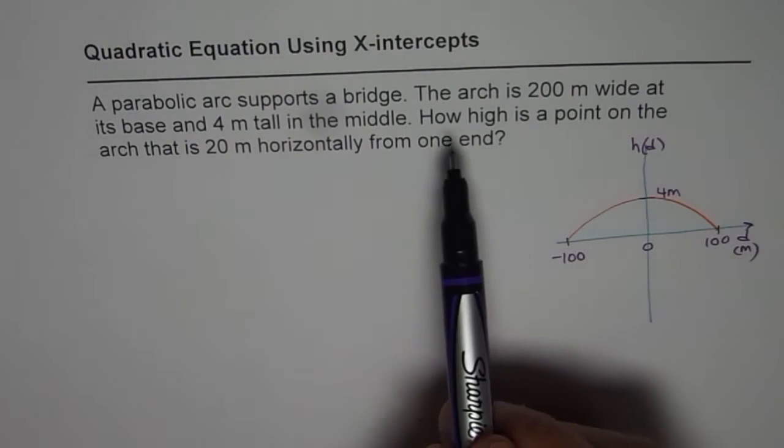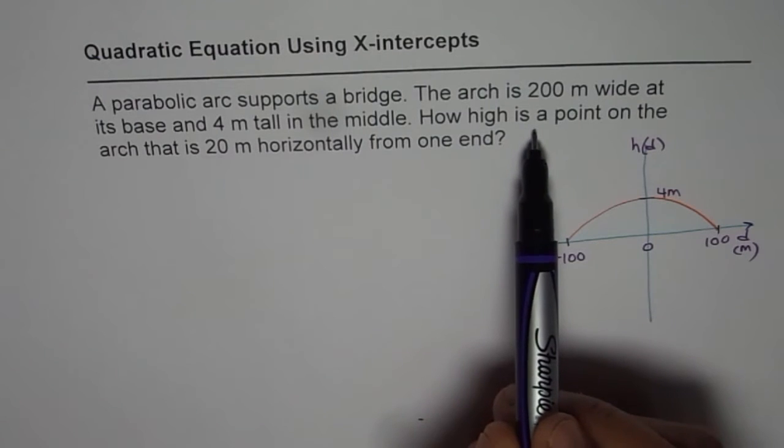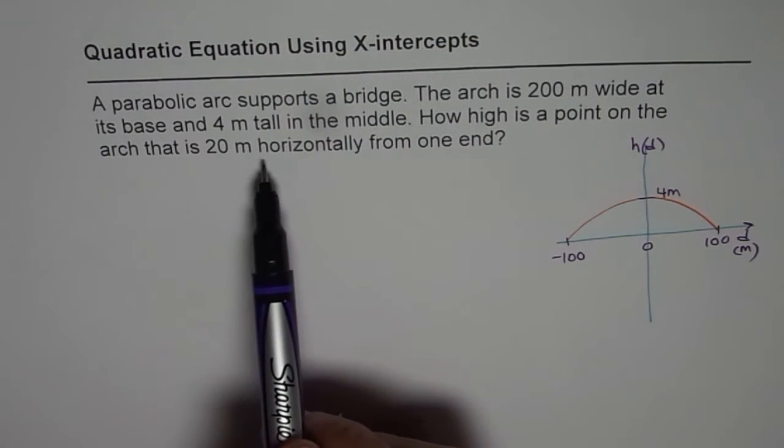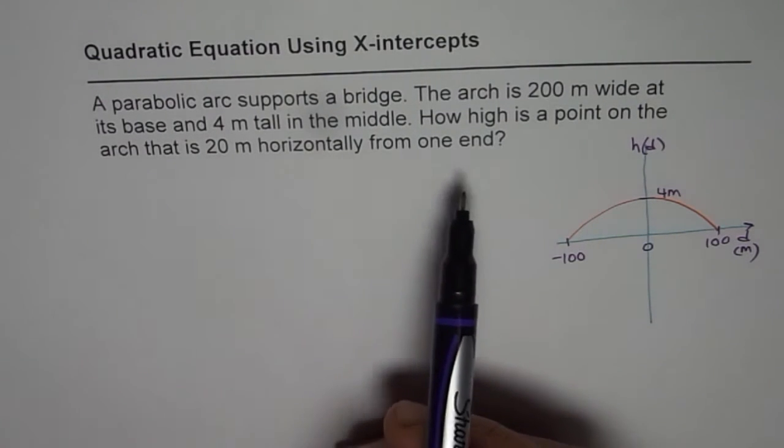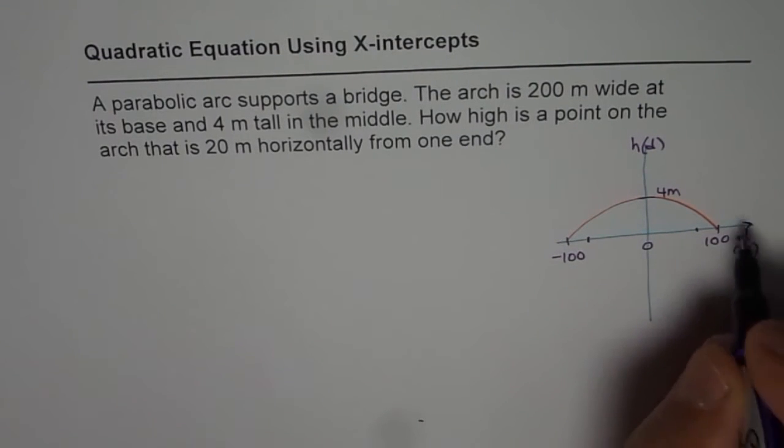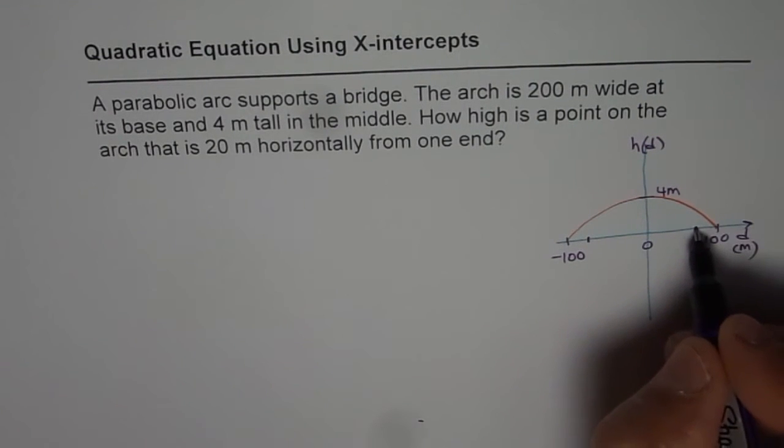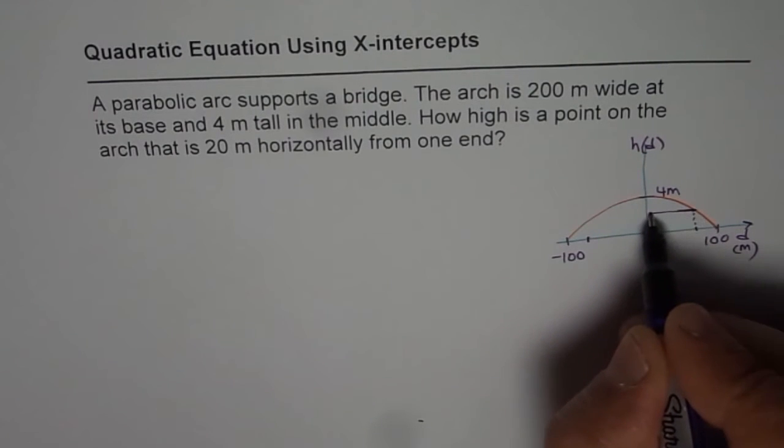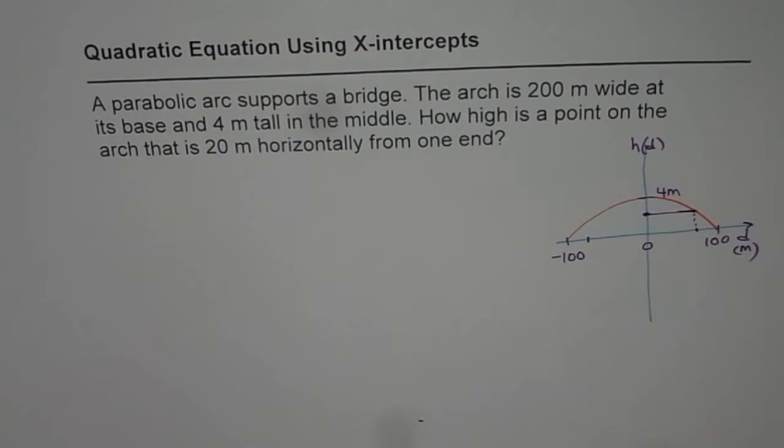Now the question is, how high is a point on the arc that is 20 meters horizontally from one end? So you can consider from this end or from the other end. It's kind of symmetric. So let me just take from the positive end. So we need to find the height, this particular height of the point which is 20 meters horizontally from one end.